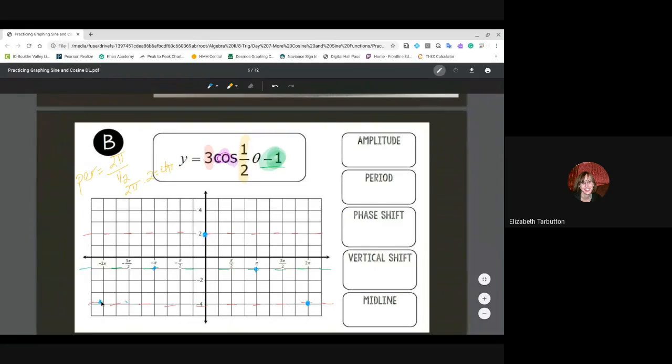So we can just kind of fill in over here: amplitude three, period is 4π. We're not going to go over phase shifts. If we were in the classroom, I probably would have gone over phase shifts, but I'm not going to go over those just in the interest of time and distance learning.